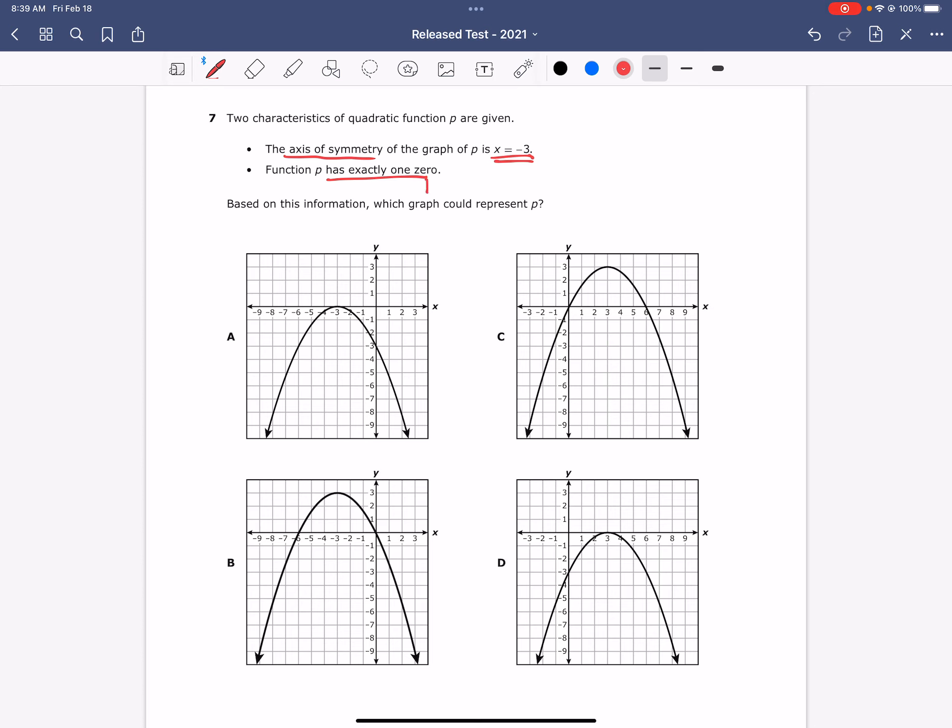What I know about zero is that it's just another way to say x-intercept. An x-intercept is where the graph crosses the x-axis. So if we look at our answer choices, letter A touches the x-axis only at this point right here, so that is a possible answer.